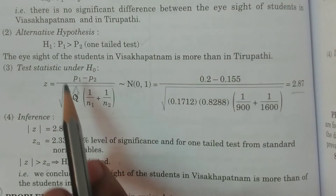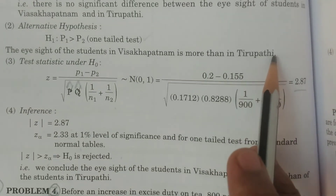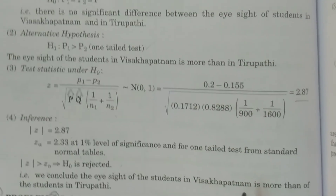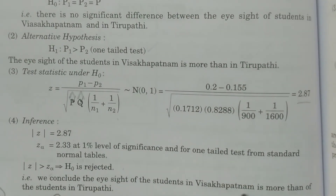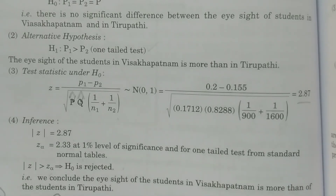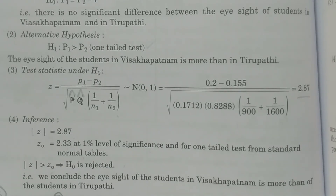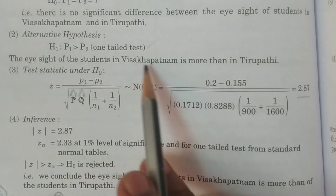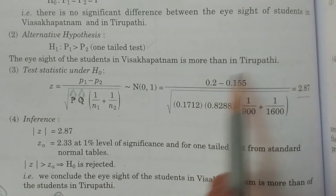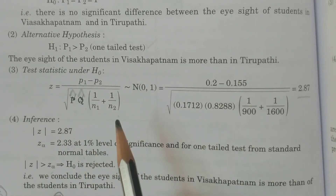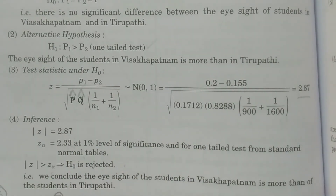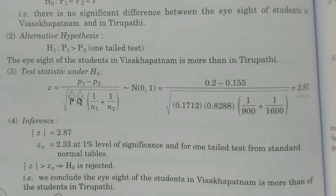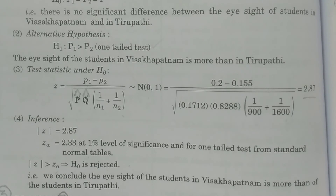H1 states that the eyesight of the students in Visakhapatnam is more than that of Tirupati. Therefore, we conclude that H0 is rejected and H1 is accepted — the eyesight of students in Visakhapatnam is significantly more than that of students in Tirupati.